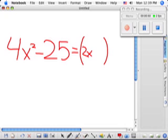4x squared is the square of 2x, and is 25 a square? Yes. Yeah, so we can factor because it's a difference of two squares.